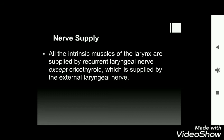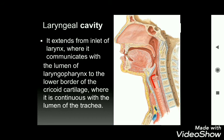The laryngeal cavity extends from the inlet of the larynx — which communicates with the lumen of the laryngopharynx — to the lower border of the cricoid cartilage. This entire region is called the laryngeal cavity. Anteriorly, the boundary is the epiglottis; posteriorly, the inter-arytenoid fold of the mucous membrane.